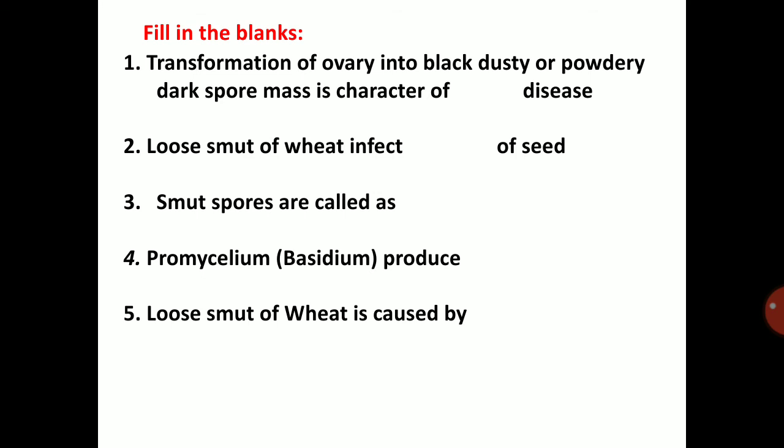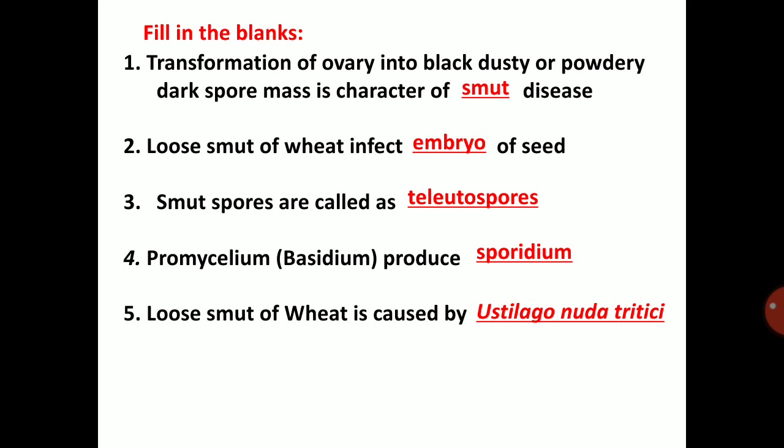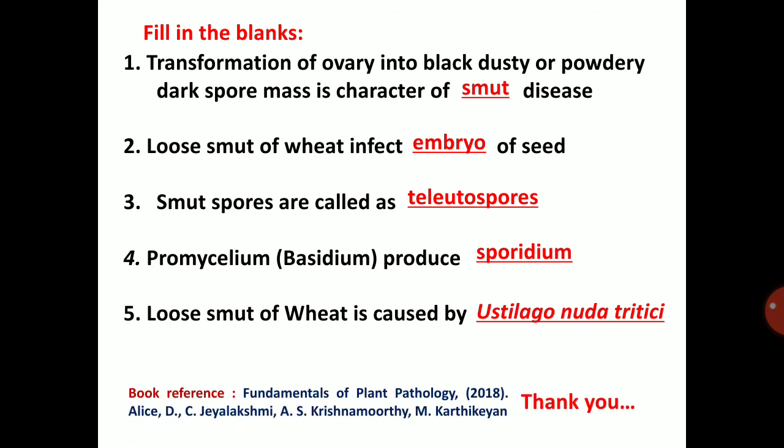Fill in the blanks: Transformation of ovary into black dusty or powdery dark spore mass is a character of smut disease. Loose smut of wheat infects the embryo of the seed. Smut spores are called as teliospores. Promycelium or basidium produces sporidium in smut fungi. Loose smut of wheat is caused by Ustilago nuda tritici.